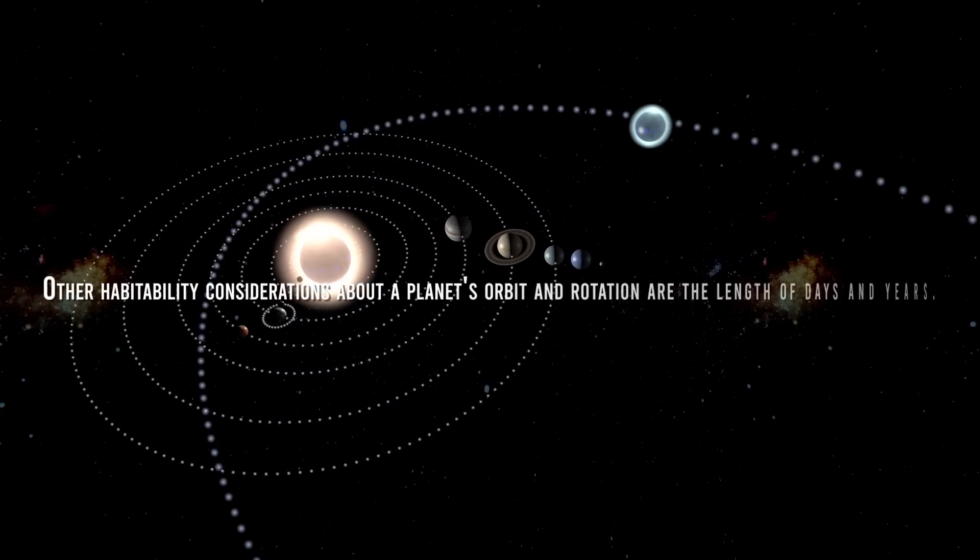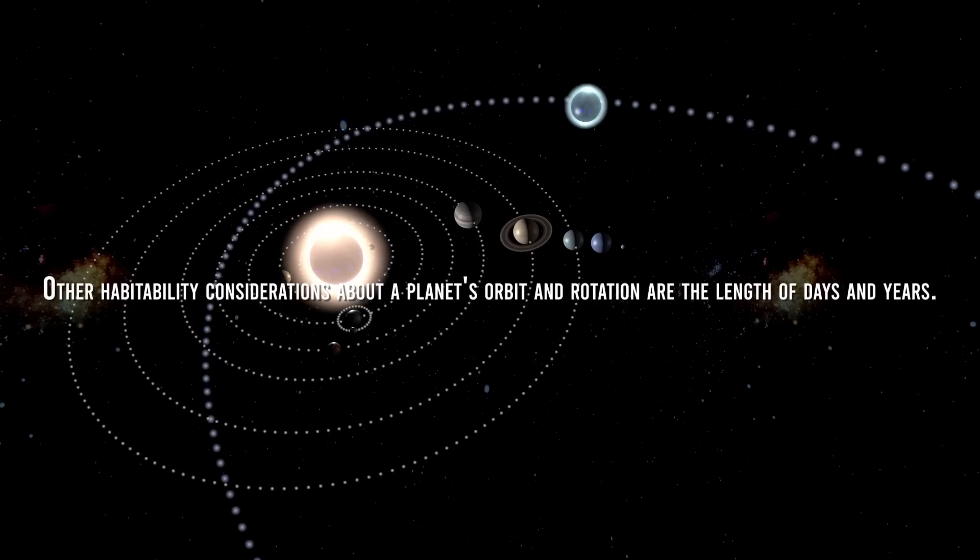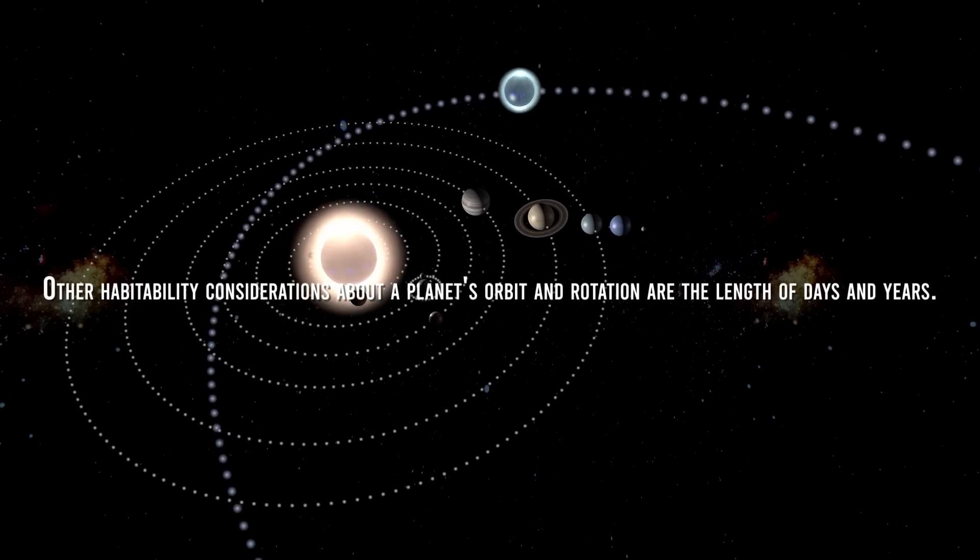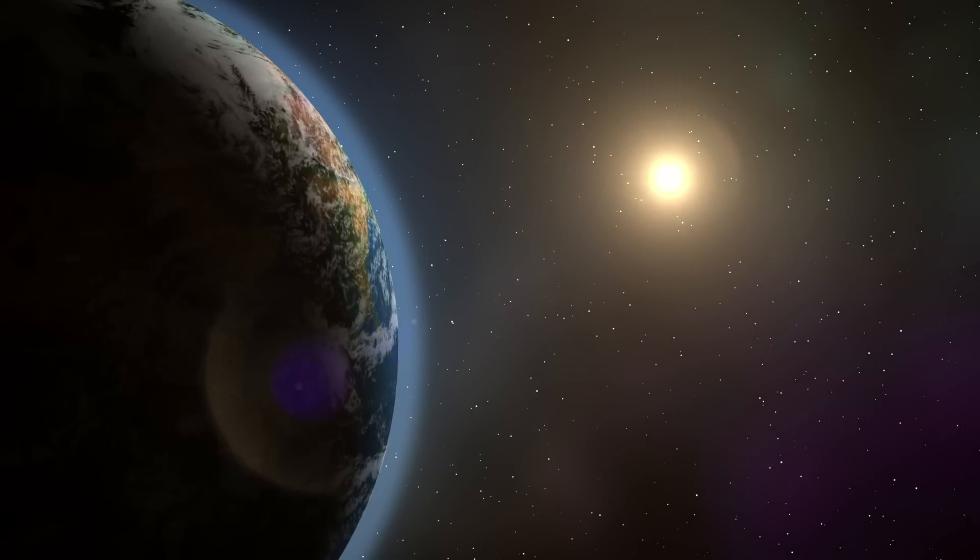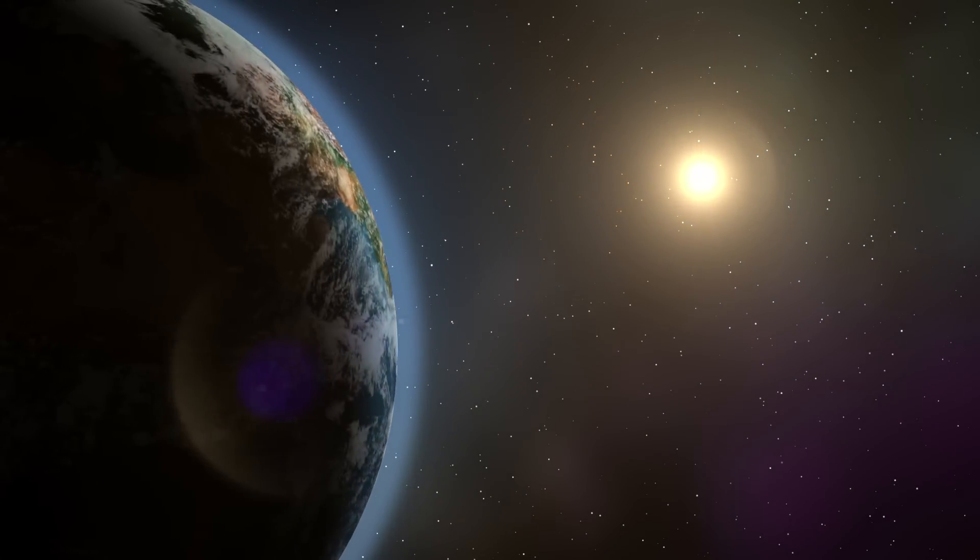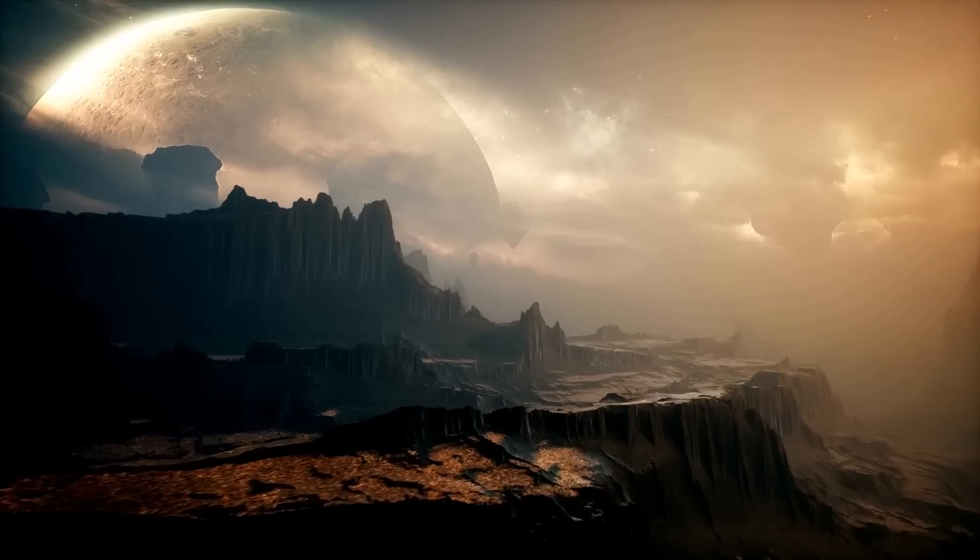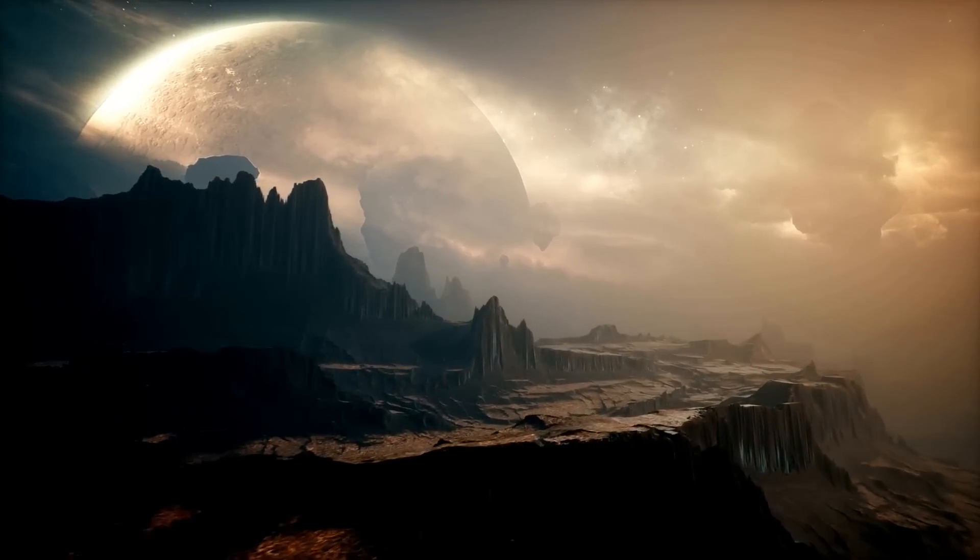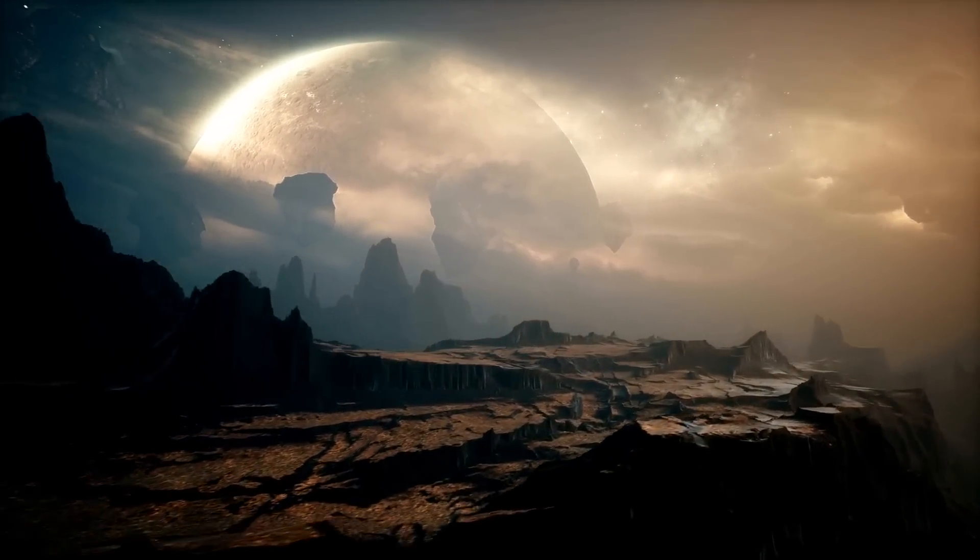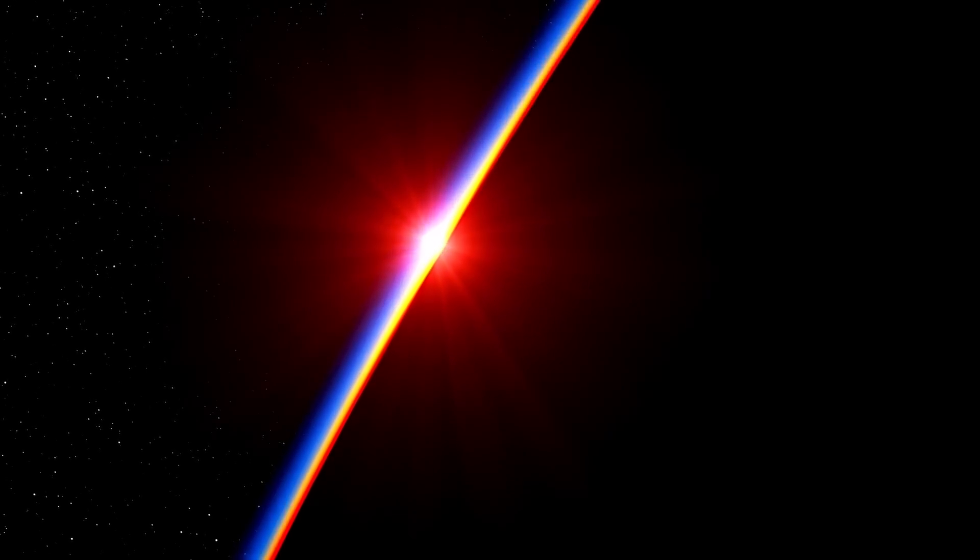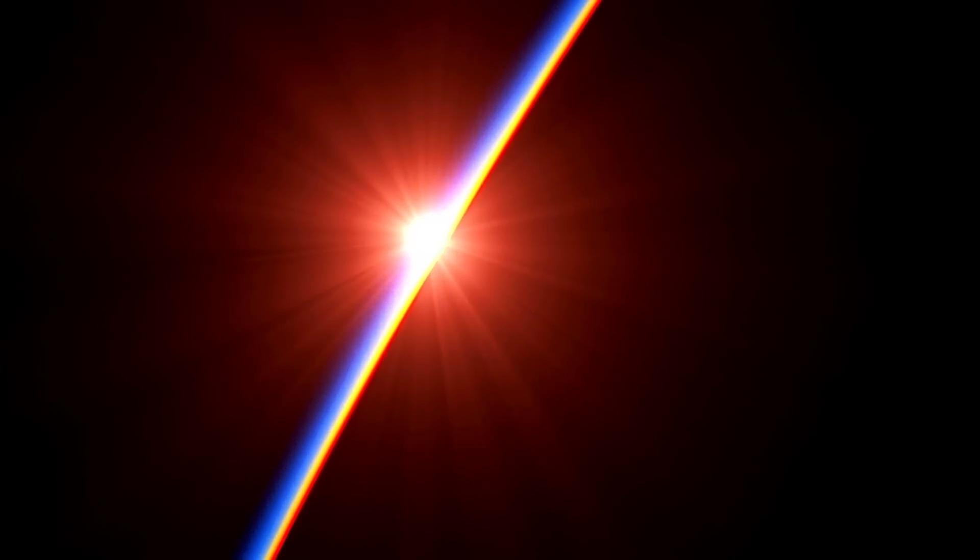Other habitability considerations about a planet's orbit and rotation are the length of days and years. For a planet to be habitable, it must rotate relatively quickly so that the day-night cycle is not too long. If a day lasts for years, the differential temperature between the day and night sides will be pronounced, and problems similar to those of extreme orbital eccentricity will appear.